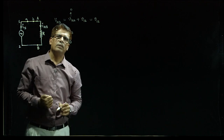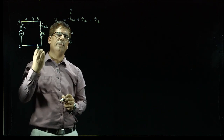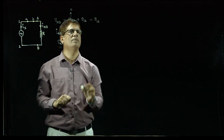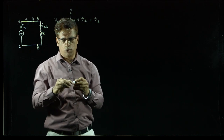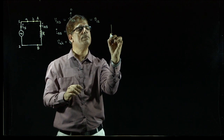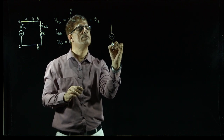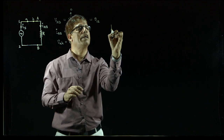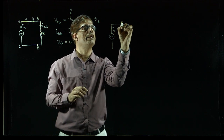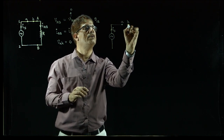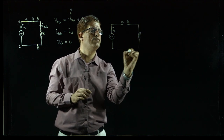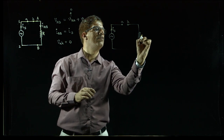If you understand this, it is very simple and easy to understand power electronics circuits as well. Now I am considering another example — a simple circuit — and opening the A and K points, disconnecting this circuit.